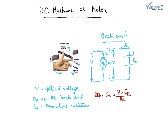The magnitude of back EMF is given by: EB equals P phi N Z upon 60A.